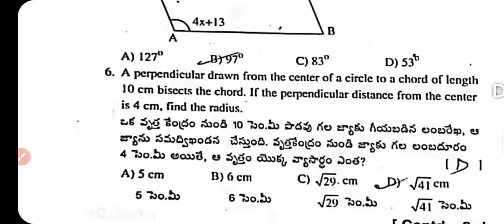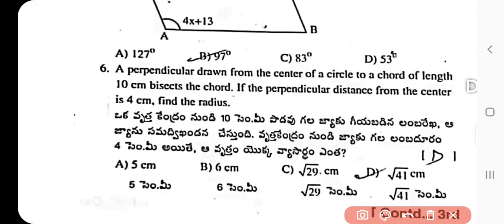Question 6: A perpendicular drawn from the center of a circle to a chord of length 10 cm bisects the chord. The perpendicular distance is given.